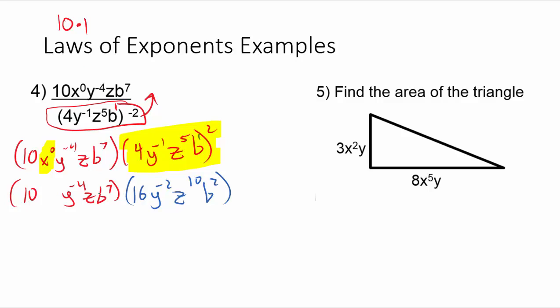Okay, now we're ready to multiply here. So, if we multiply across, 10 times 16 will be 160. If we look at our y's, this will give us, we need to add the exponents. This would be y to the negative six. The z's will give me z to the eleventh power. And the b's will give me b to the ninth power.